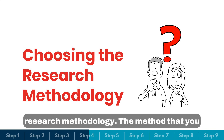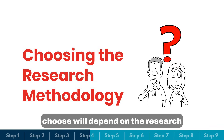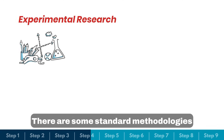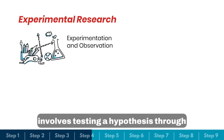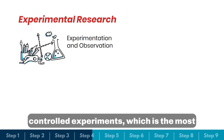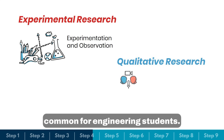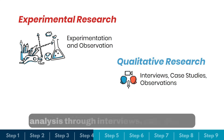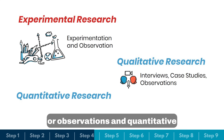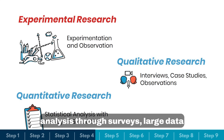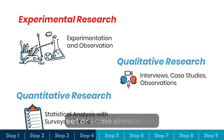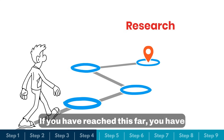Depending on the kind of project you select, you need to choose the right research methodology. The method you choose will depend on the research problem and your field of study. Standard methodologies include experimental research, which involves testing a hypothesis through controlled experiments — most common for engineering students; qualitative research, which is in-depth analysis through interviews, case studies, or observations; and quantitative research, which involves statistical analysis through surveys, large datasets, or simulations.